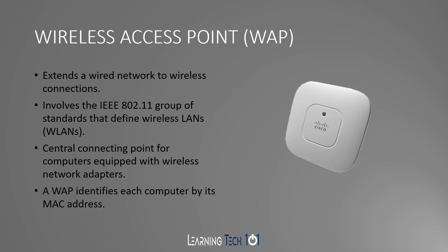Next we have your wireless access point. This is used to extend a wired network to wireless devices. It involves the 802.11 group of standards that define wireless LANs, and it serves as the central connecting point for computers equipped with wireless network adapters. A wireless access point keeps track of everyone connecting to it by MAC address, so wireless access points operate at layer two of the OSI model. Being the central connection point, a wireless access point functions like a hub device in a star topology.